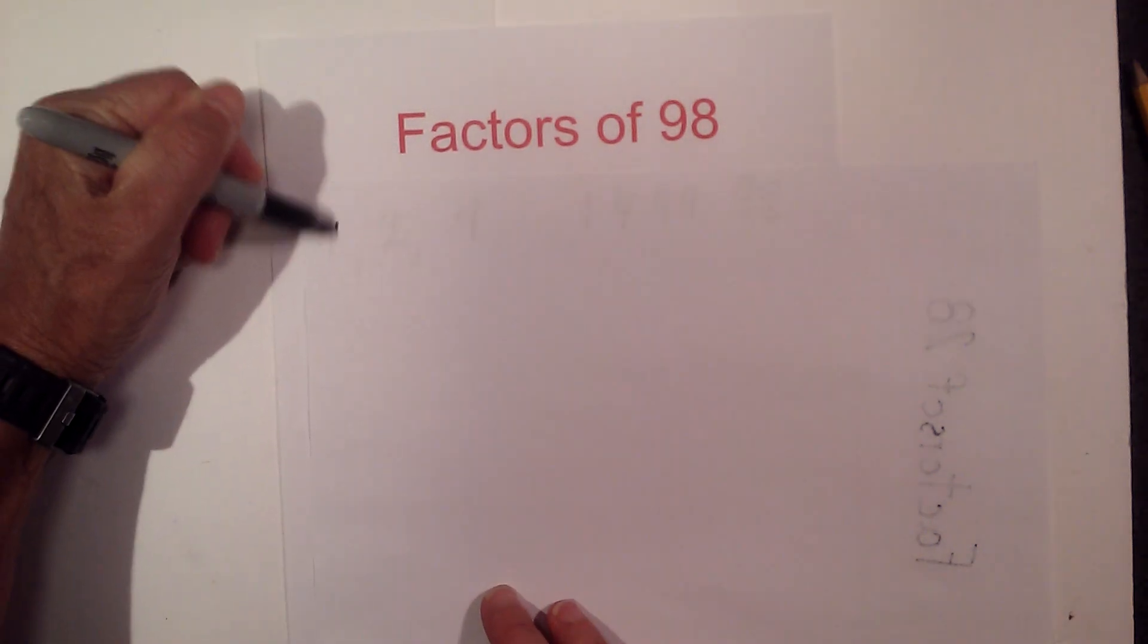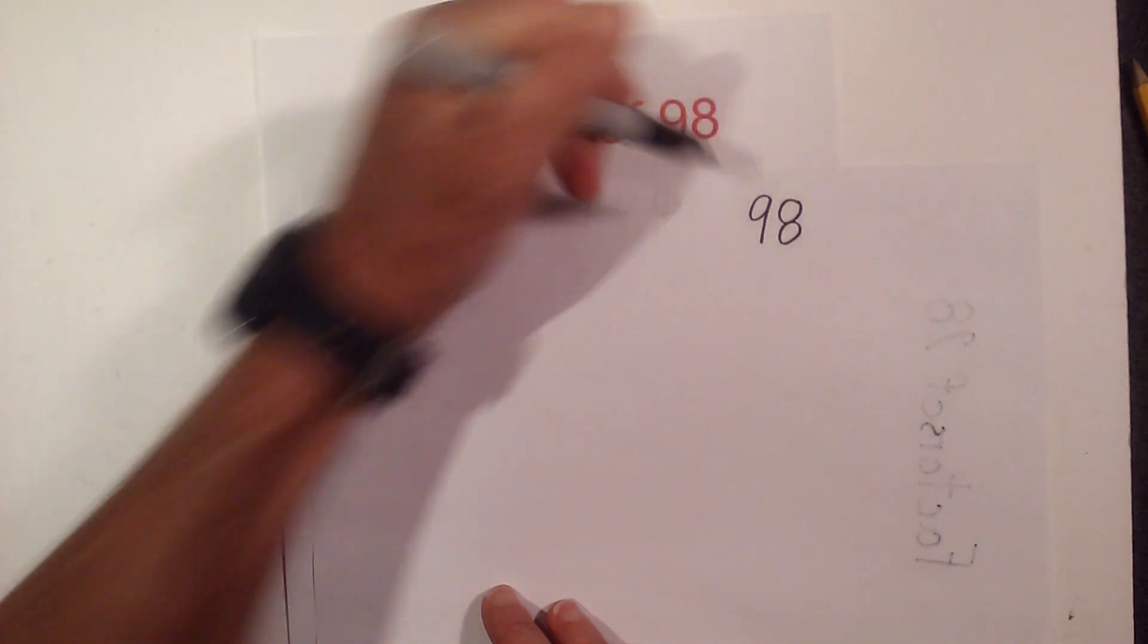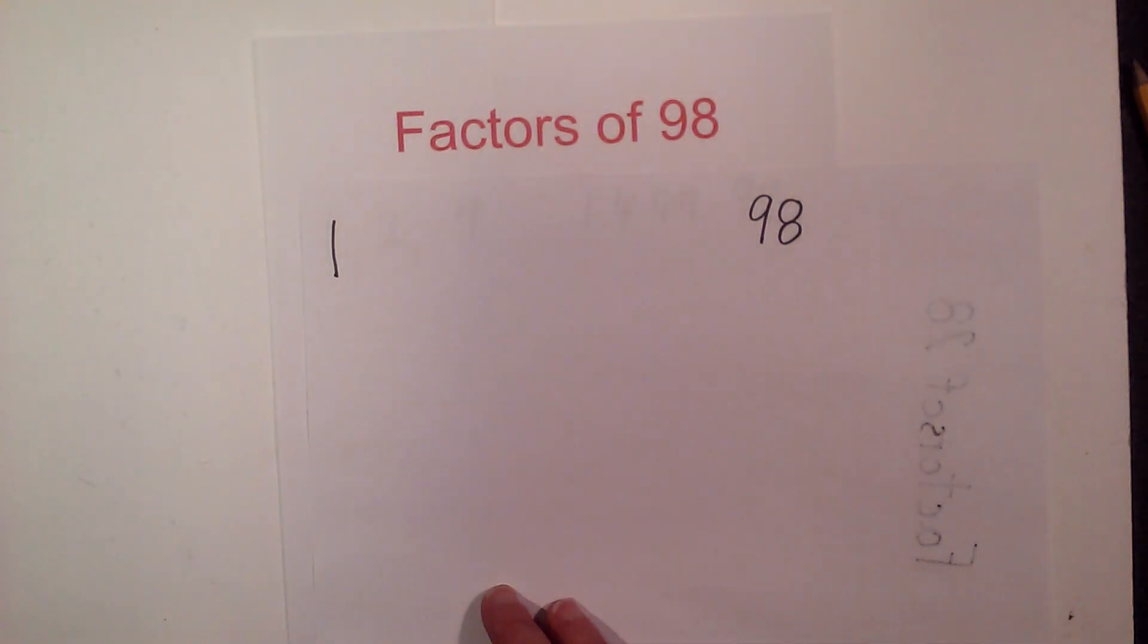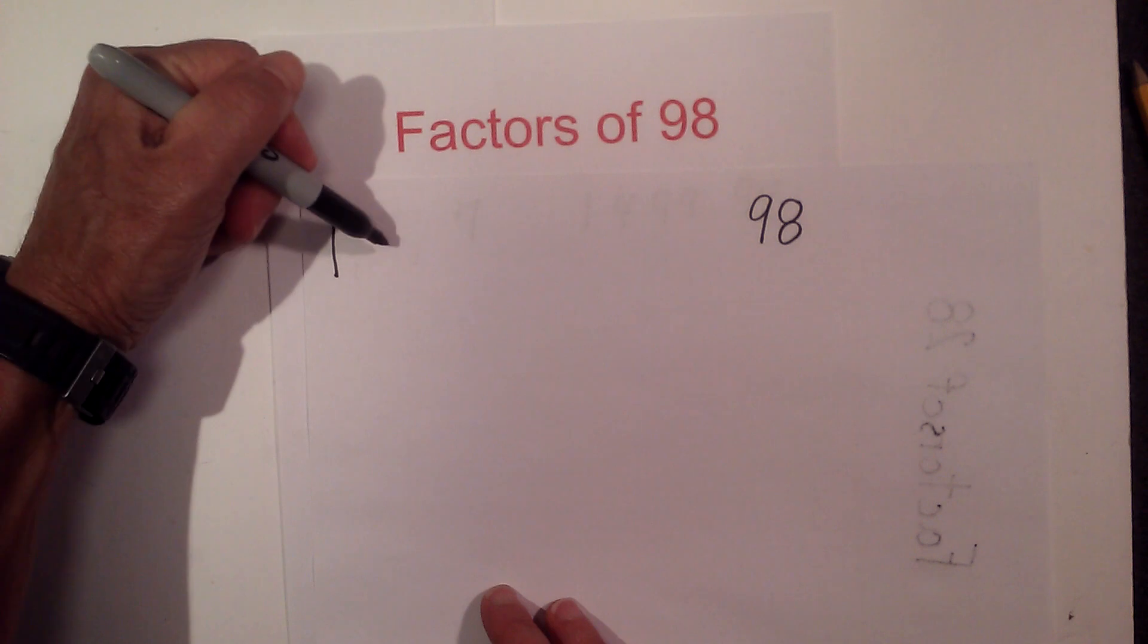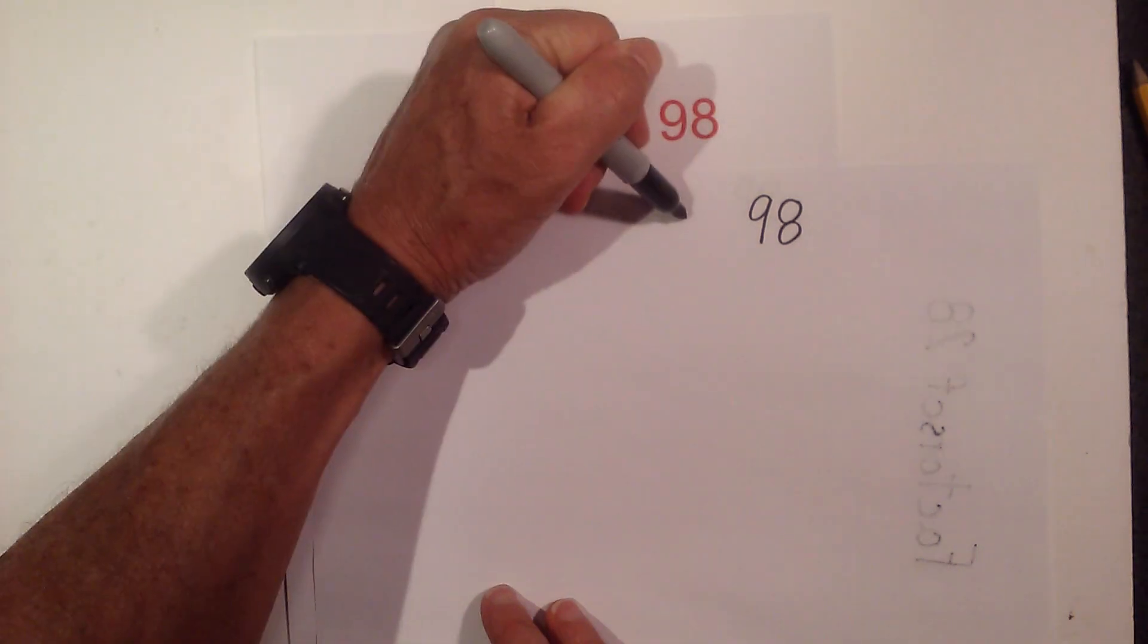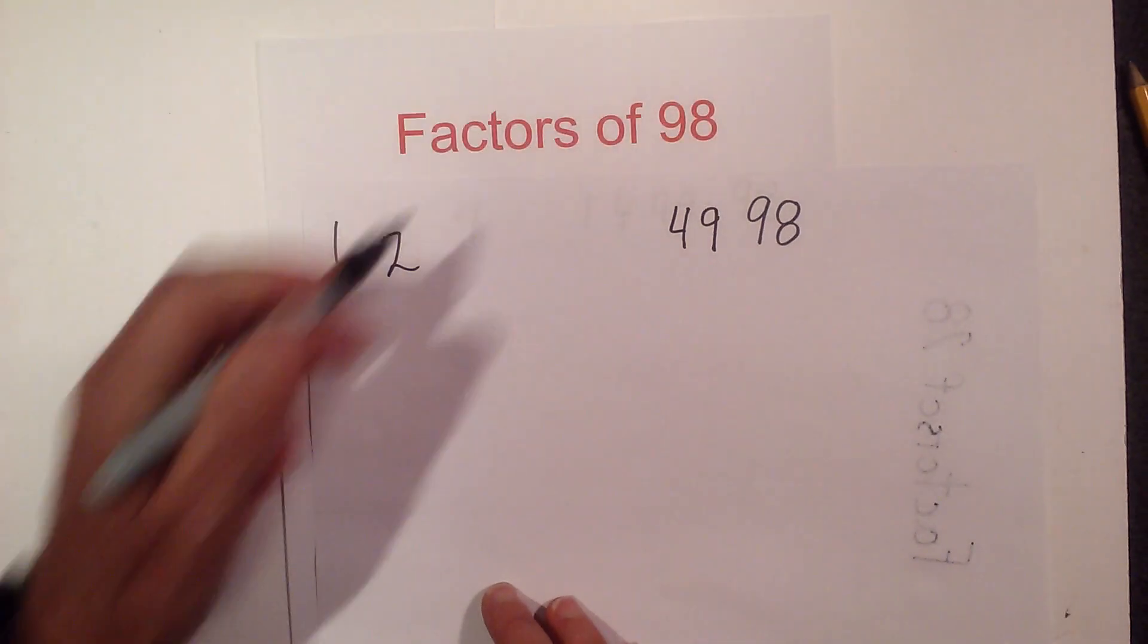I like to begin with multiplying 1 times 98 and then find all the numbers in between that multiply together to equal 98.